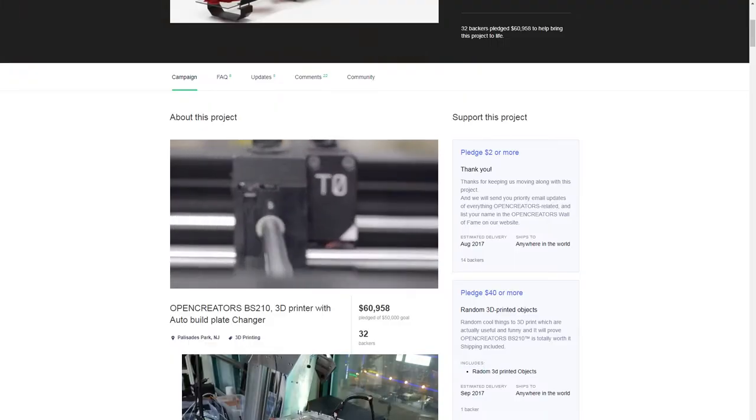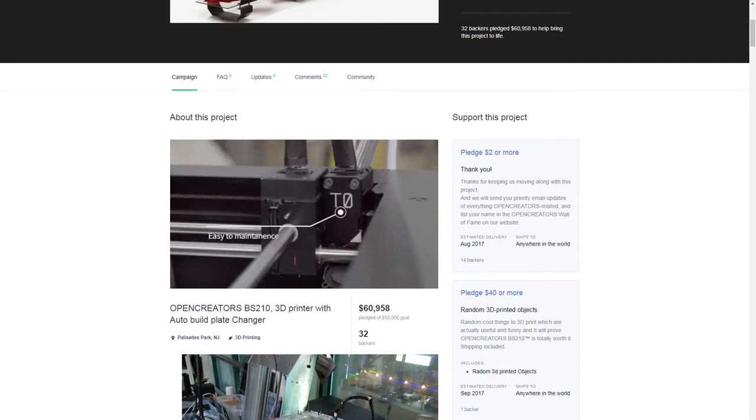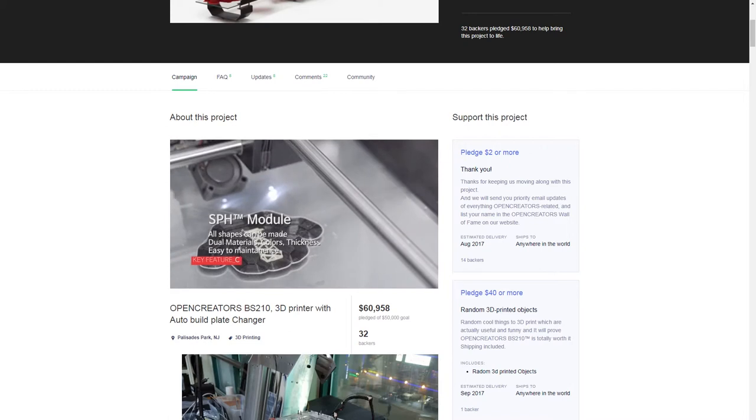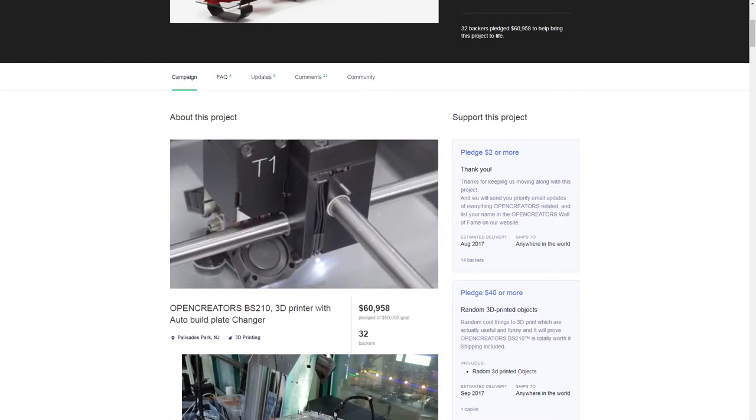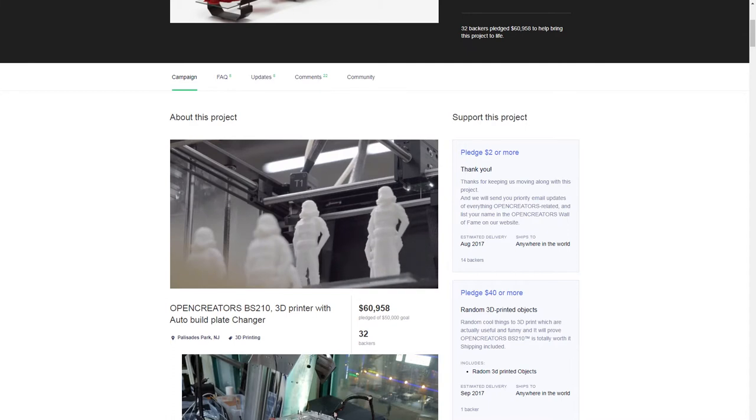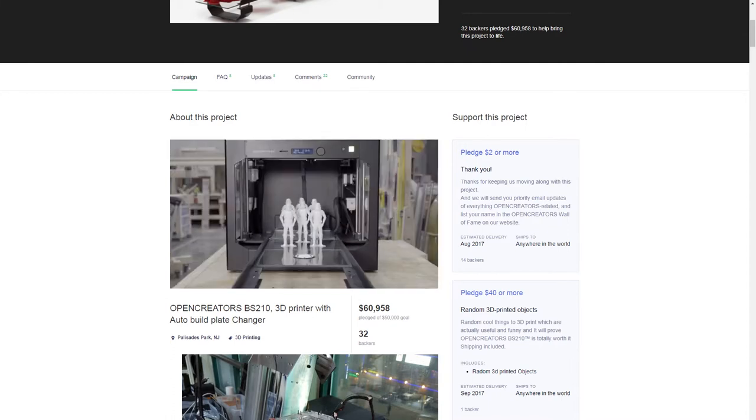Someone in the comments posted about Open Creators, they made a print with an Auto Build Plate Changer. It was really interesting. That's already been done. It'll look like an Ultimaker. A lot of these automation systems, when you look at them, are pretty complicated on the hardware side. These belt-based printers are, relatively speaking, pretty simple. It's a belt.